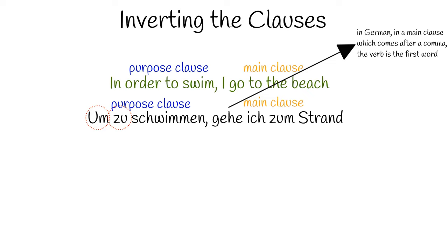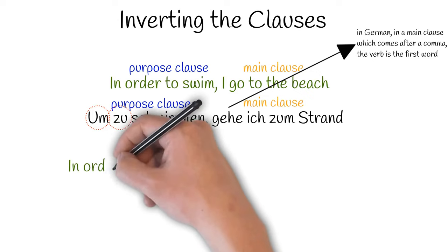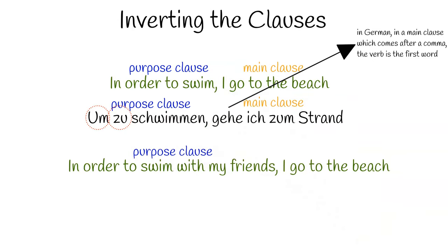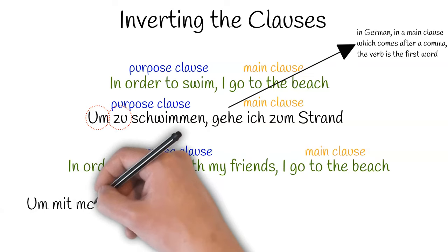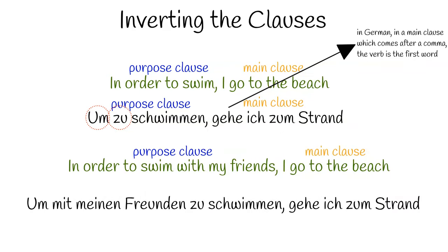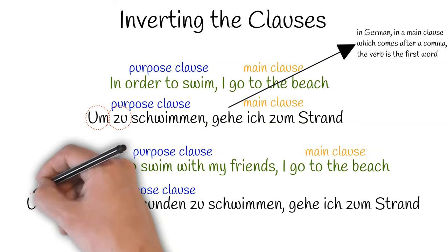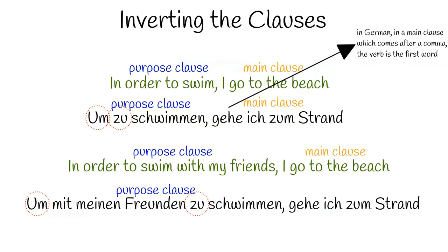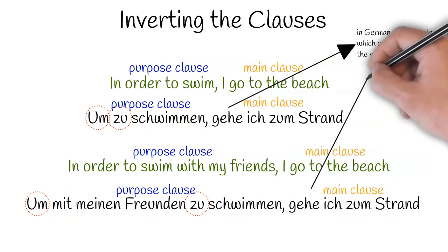Let's look at the second example inverted: 'In order to swim with my friends, I go to the beach.' Purpose clause first, followed by main clause. In English, we often have a comma between the purpose clause and the main clause, but in German it's compulsory. 'Um mit meinen Freunden zu schwimmen, gehe ich zum Strand.' Purpose clause first — um at the start, zu just before the verb at the end, all the other information in between, and then the main clause starting with gehe because the main clause is not the first one.